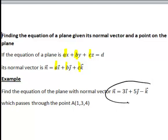So first of all we'll use the information about the normal vector to say that hence the equation of the plane must be of form 3x plus 5y minus z equal to some constant D.